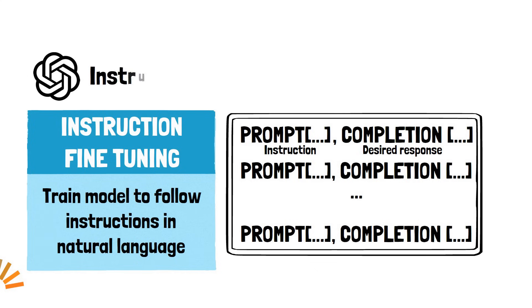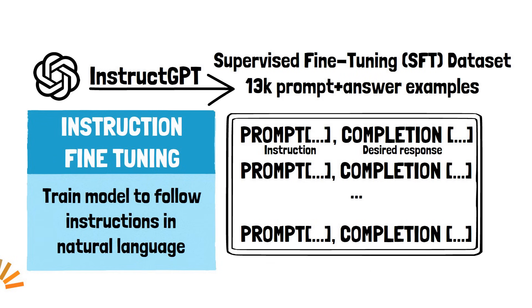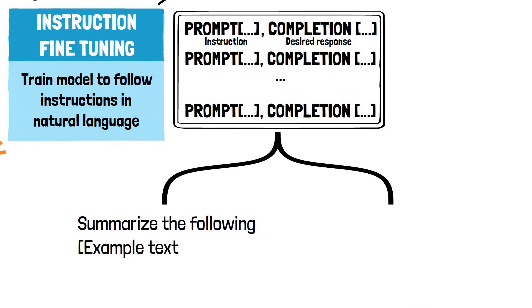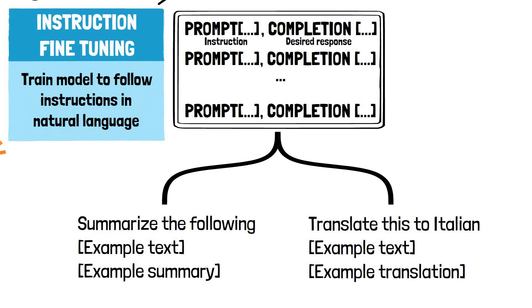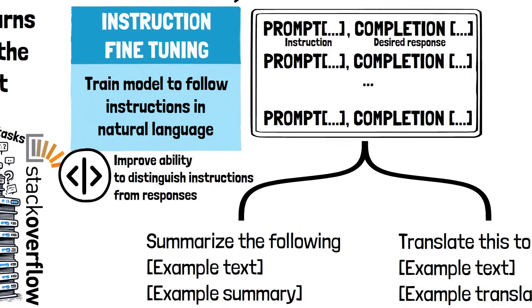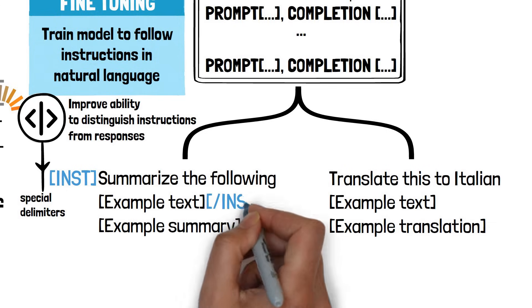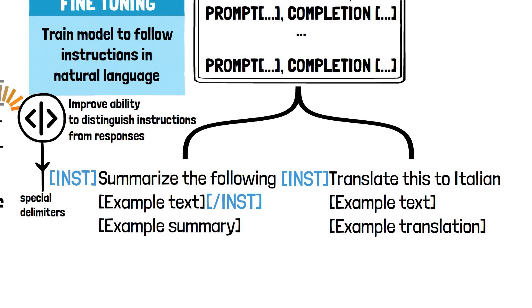The InstructGPT dataset contained over 13,000 prompts across different tasks like summarization, question answering, translation, and analysis. For each task, the dataset had examples of human-written responses aimed at providing helpful and truthful outputs. To improve the model's ability to distinguish between instructions and expected responses, special delimiters are often used during the fine-tuning phase. These markers surround the instructions in training data, clearly separating them from the completions that follow. This method helps the model better learn the distinction between what is being asked and what the appropriate way to respond is.